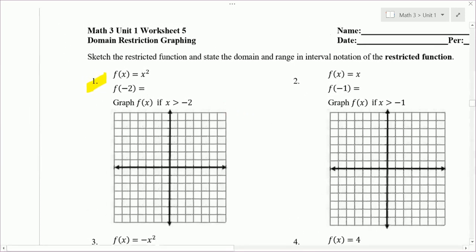Number 1, we have f(x) is x squared, that's the parent graph of the quadratic. We're asked to find f of negative 2, so if I plug in a negative 2, I get negative 2 squared which is positive 4. So that's telling us that when x is negative 2, y is 4, so that's a point that we go through.